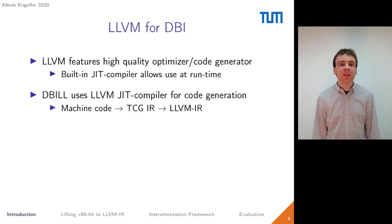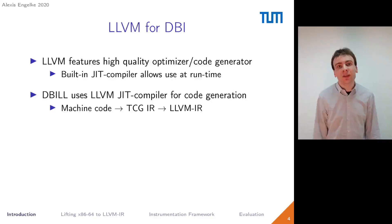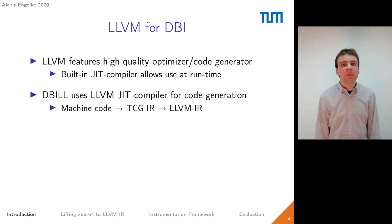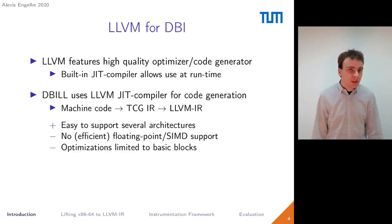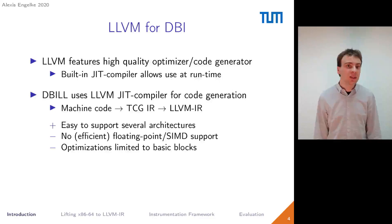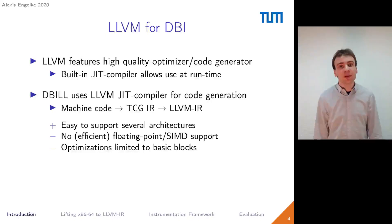We are not the first to propose the use of LLVM for dynamic binary instrumentation. DBIL uses the LLVM JIT compiler for code generation. They lift machine code first to TCG IR using QEMU — TCG being the internal code representation used by QEMU — and from TCG they lift the code further to LLVM IR. This makes it easy to support several architectures, since QEMU supports many. However, this has two major drawbacks: first, it is not possible to efficiently support floating-point or SIMD operations due to limitations in the TCG instruction set; second, optimizations are limited to basic blocks or small chains of basic blocks, being unable to exploit the full power of LLVM's optimization framework.